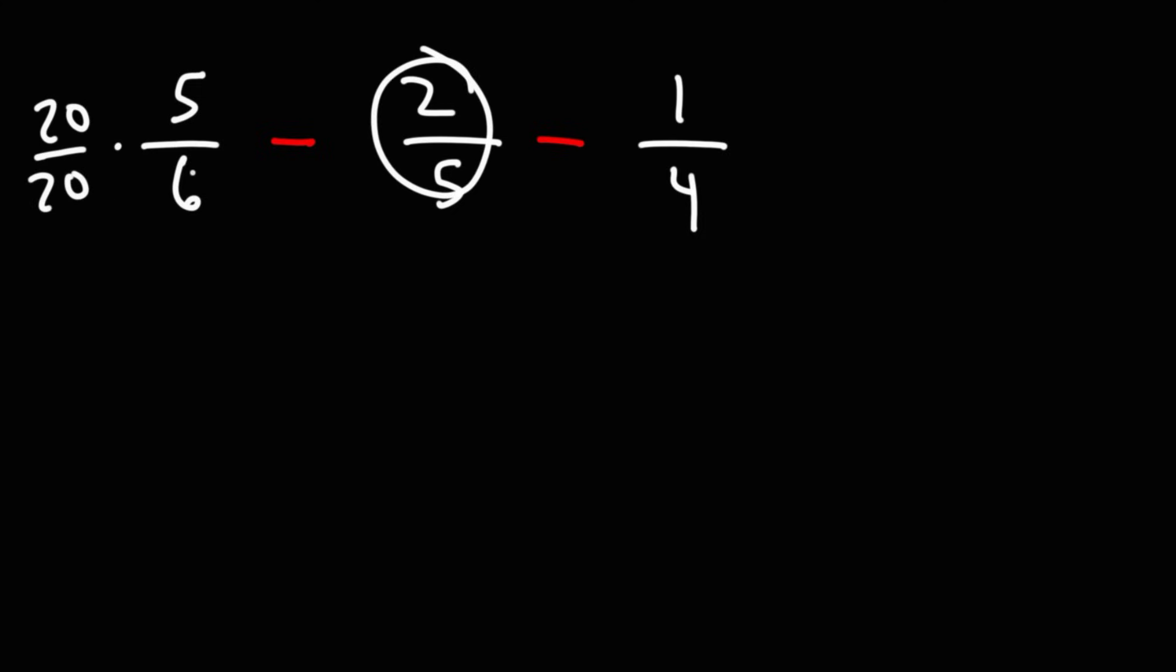Now the second fraction, I'm going to use the other two denominators on the second fraction. So 6 times 4 is 24. I'm going to multiply the top and bottom by 24. For the third fraction, I'm going to use the first two denominators. 6 times 5 is 30. So I'm going to multiply this fraction by 30 over 30.